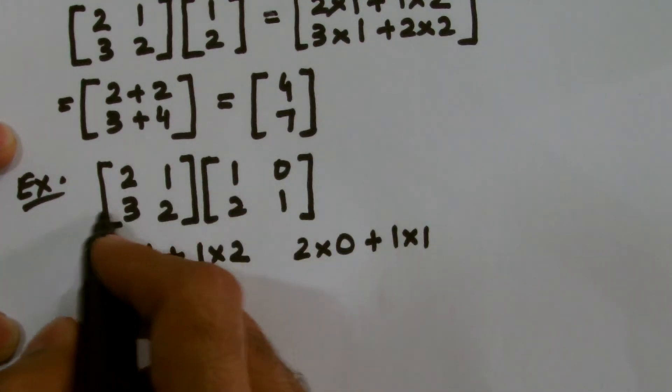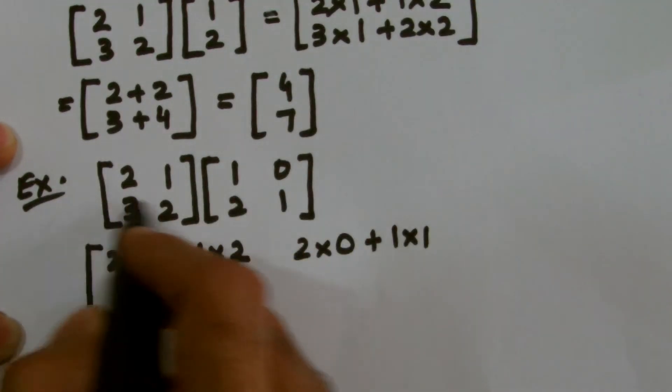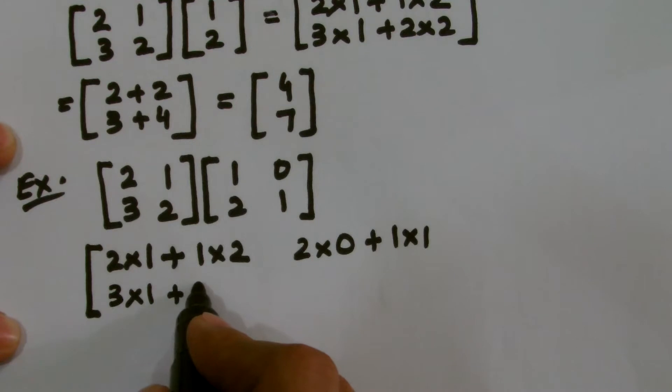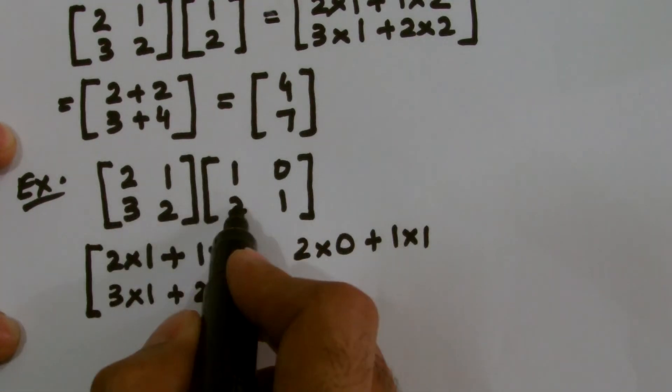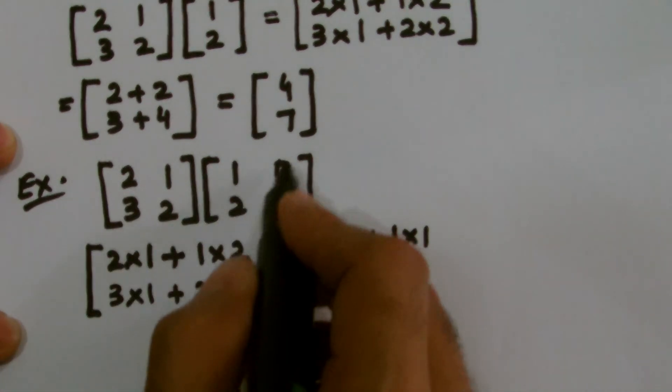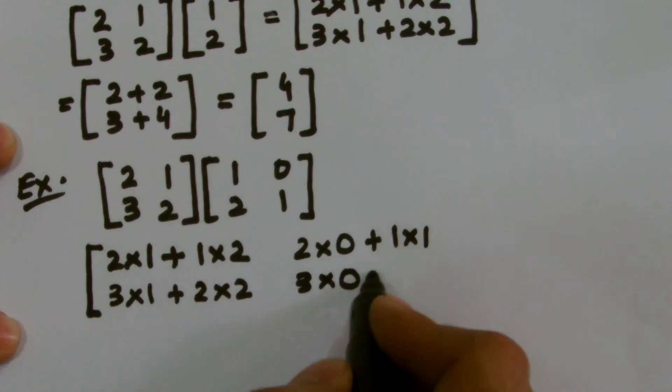Similarly, I will now be multiplying the second row with the second column, so when I proceed, I get 3 into 1, I get 2 into 2, 3 multiplied by 1, 2 multiplied by 2. Similarly, 3 will be multiplied with this 0, and 2 by this 1. I do have a shortcut for this, but I will discuss it some day later.